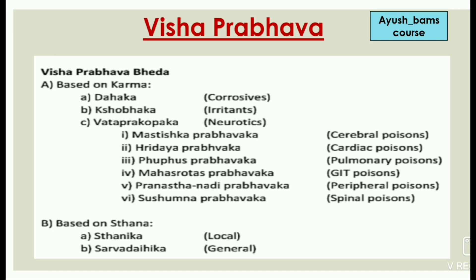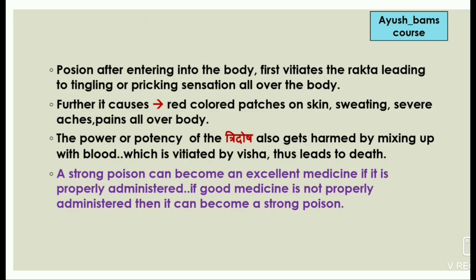Now we will see Visha Prabhava classification. Visha Prabhava Bhedha: based on karma it is divided into three types — Dahaka, Shobhaka, and Vataprakopaka. This Vataprakopaka is further divided into six types: Mashtiska Prabhavaka, Hridaya Prabhavaka, Phupus Prabhavaka, Mahasrotras Prabhavaka, Pranasthanadi Prabhavaka, and Sushumna Prabhavaka. Based on Sthana, these are divided into two types: Sthanika (local) and Sarva Dahika (general). Poison after entering the body first vitiates the Rakta, leading to tingling or pricking sensation all over the body, and further causes red-colored patches on skin, sweating, and severe aches and pains.